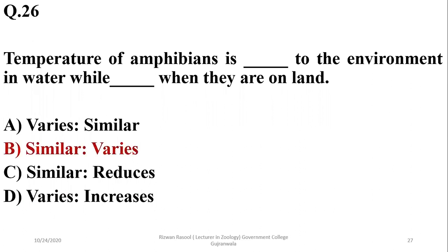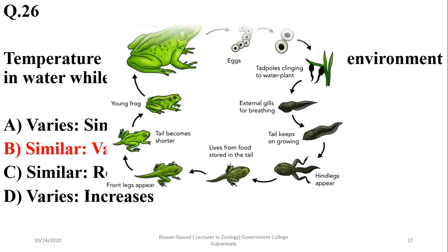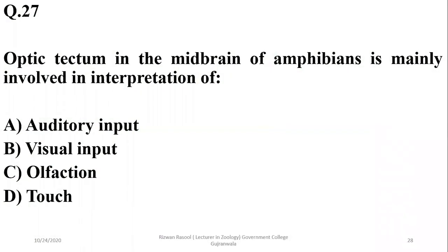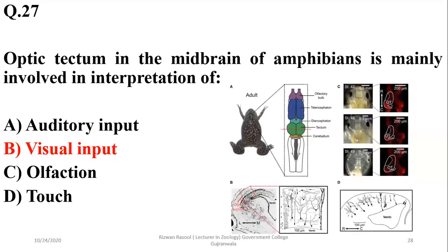Initial stages of amphibians pass most of their time in water, while adult stages may live some time on land as well. The optic tectum in the main brain of the amphibian is the main structure for the interpretation of visual input — it is concerned with the vision process.